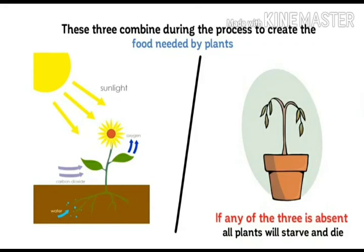These three things combine during the process to create the food needed by plants: sunlight, carbon dioxide, and water.